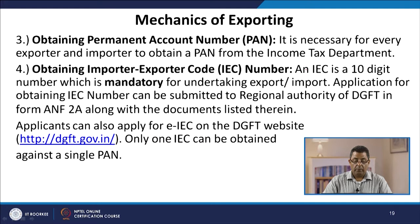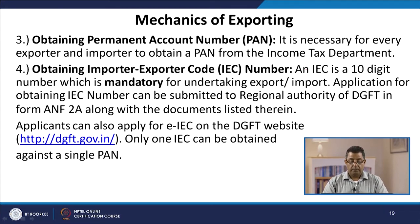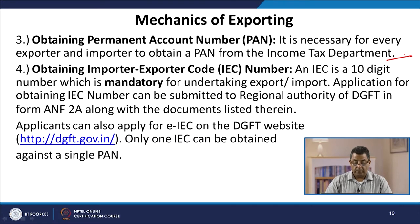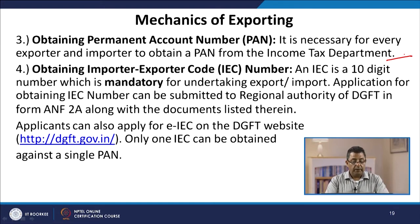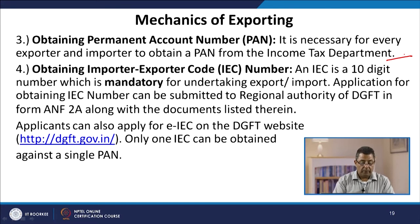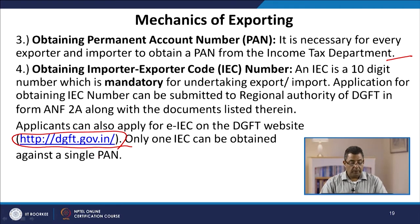The fourth step is to obtain an Importer-Exporter Code (IEC) number — a 10-digit number mandatory for undertaking exports and imports; without it, exports and imports cannot be undertaken. Application for the IEC number can be submitted to the regional authority of the Directorate General of Foreign Trade in Form ANF2A along with required documents. Applicants can also apply for an electronic IEC on the DGFT website. Only one IEC can be obtained against a single PAN.